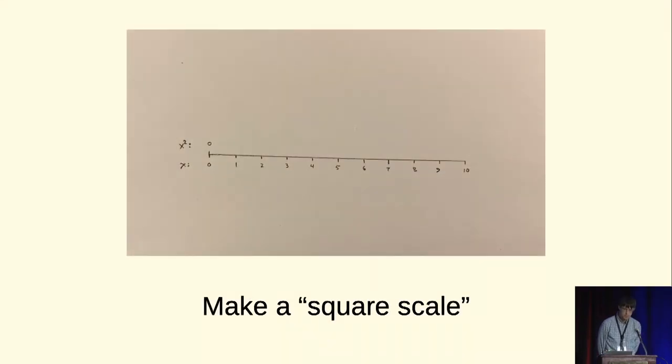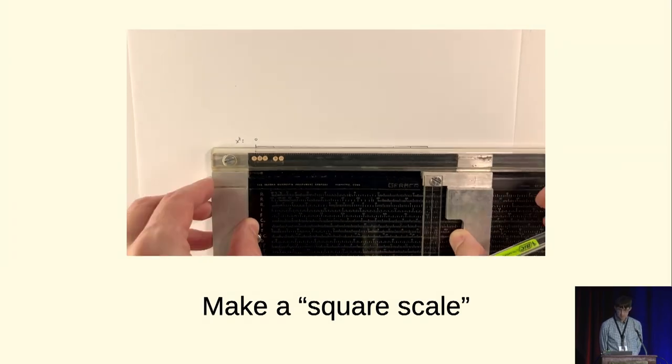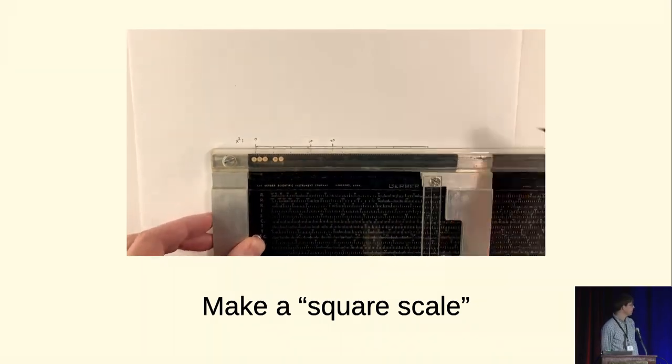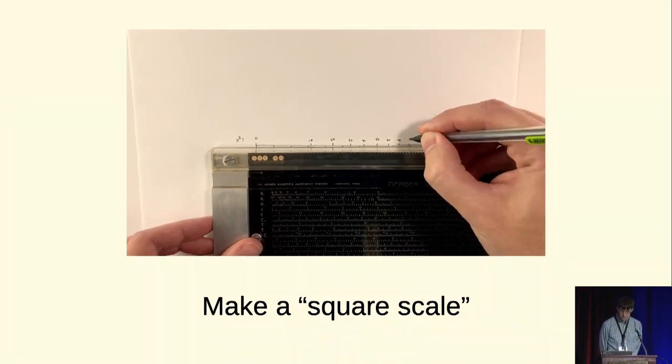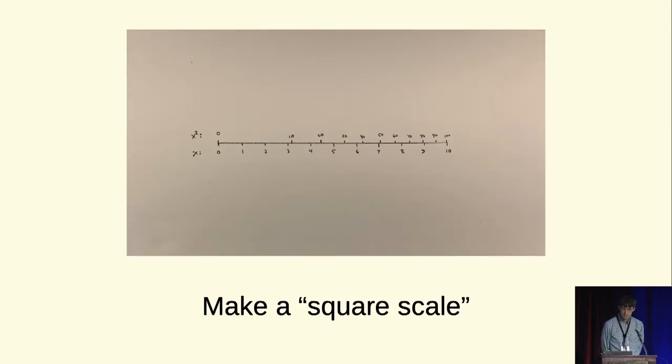I'll just do an example here of making a square scale. I have an ordinary scale on the bottom there, 1 to 10, and what I'm doing is marking off a scale of the squares of the bottom scale. So you can see the 10 there is slightly to the right of the 3 on the bottom. That's because the top scale is the square of the bottom scale. Strange.